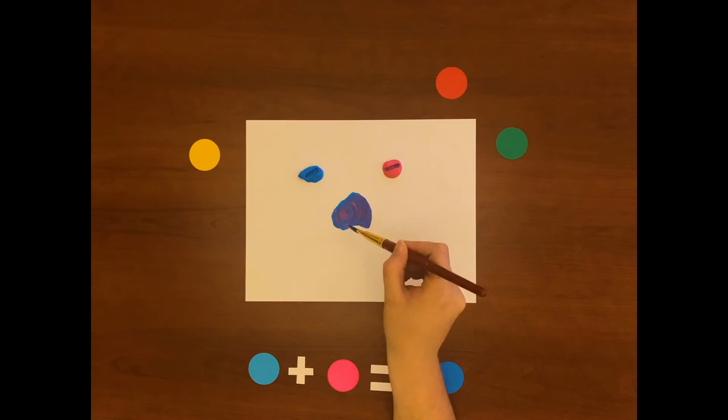Here's an example. If you mix cyan and magenta you can make blue. This shows that blue can be made by mixing colors and by definition cannot be primary. Here if you take yellow and magenta you'll get red.